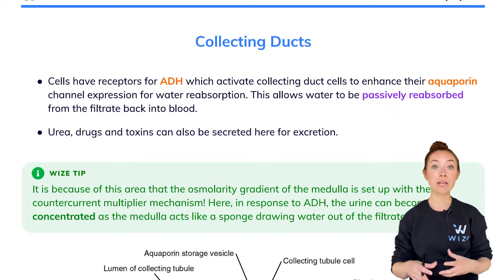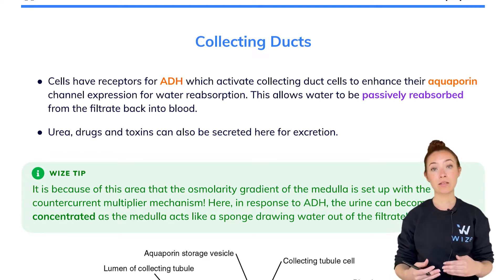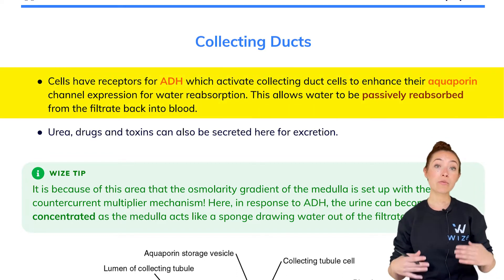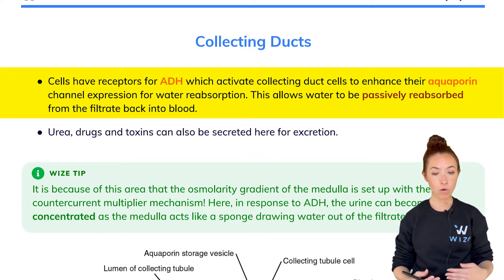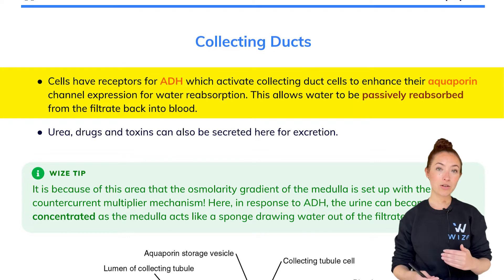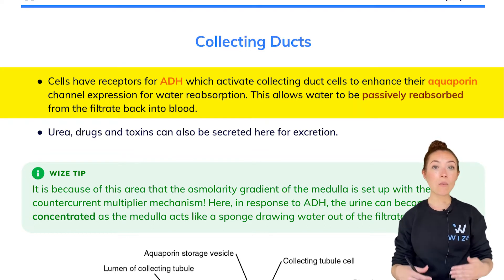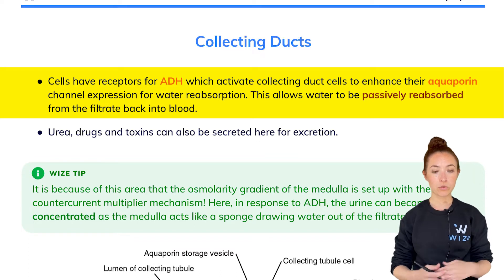This is where we can fine-tune absorption of water based on our body's needs. That's because the collecting ducts have cells that have receptors for ADH, or antidiuretic hormone. We've talked about ADH a lot before, but we never really talked about exactly how it causes increased water reabsorption — so now you're going to find out.